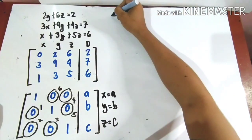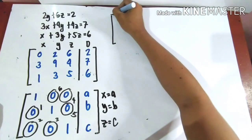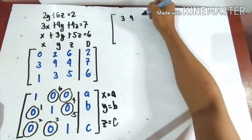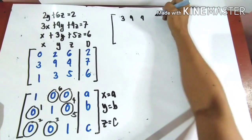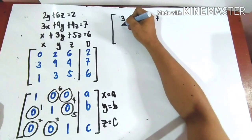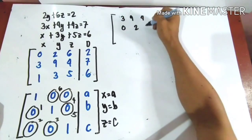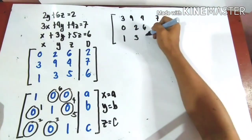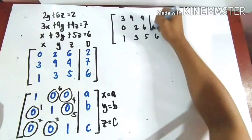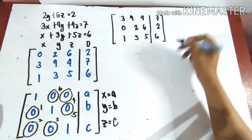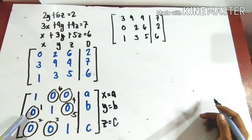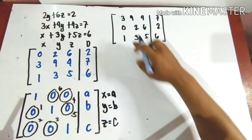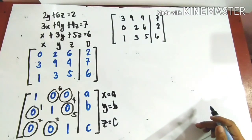After the swap, the new matrix form has row 1 as the second equation: 3, 9, 4, and 7. Then row 2 is: 0, 2, 6, 2. And row 3 is: 1, 3, 5, 6. The x of row 2 is now already 0, so that first step is done.